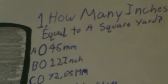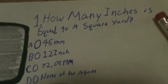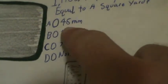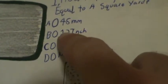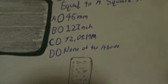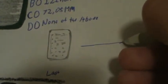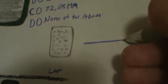Here's a question where you might be asked: how many inches is equal to a square yard? Right here you have options like A, B, C, and D. Let's say option A is 90, option B is 45 millimeters, option C is 12 inches, and option D is 72.5 millimeters. If most of us can remember, thinking about the measurements of a yardstick — it's like a 12-inch ruler — most of us who are good at math might figure this out.